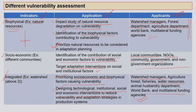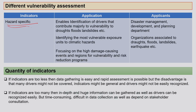Hazard-specific indicators address different hazards such as flood and drought. These indicators help identify the drivers that mainly contribute towards vulnerability, identify the most vulnerable exposure units to climatic hazards like flood and drought, and focus on high-damage-causing events and regions for vulnerability and risk reduction programs. Applicants include disaster management experts, development planning departments, and organizations associated with drought, flood, landslide, and earthquake management.